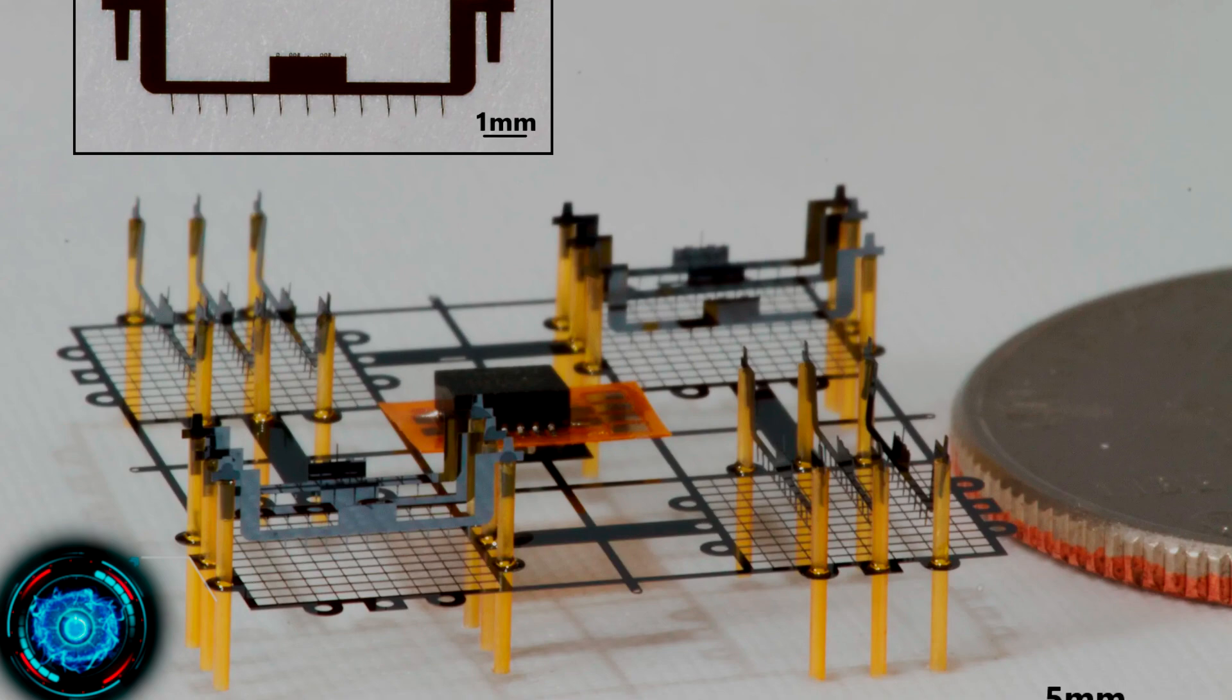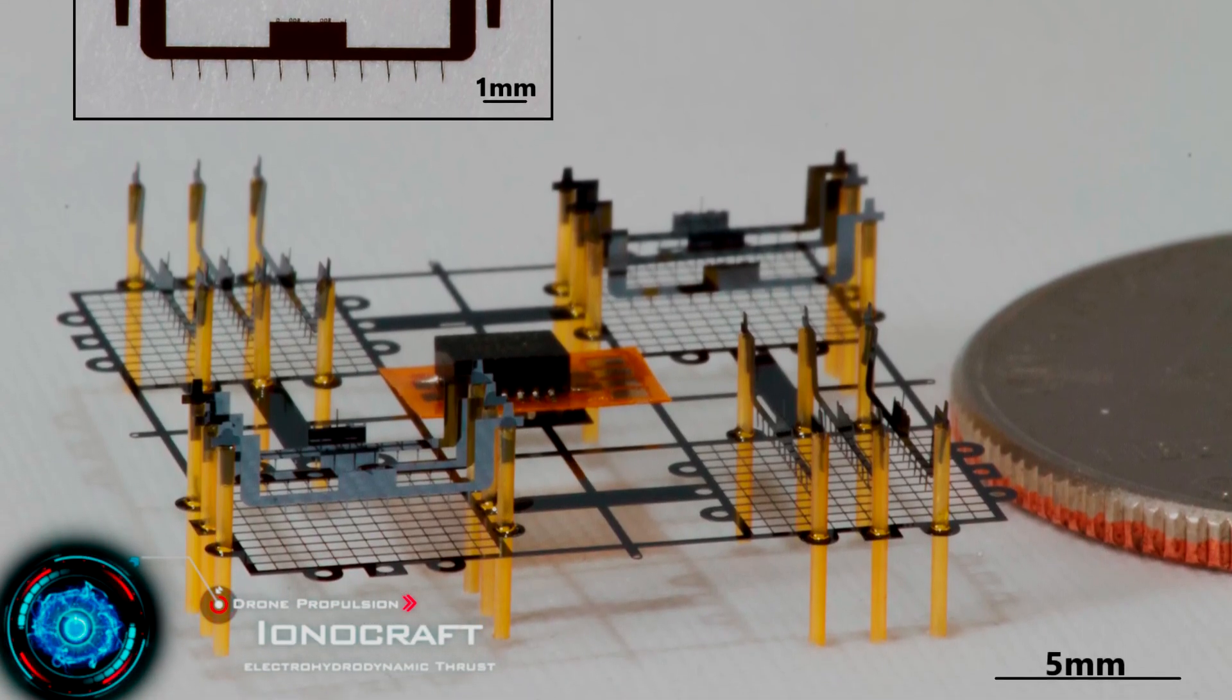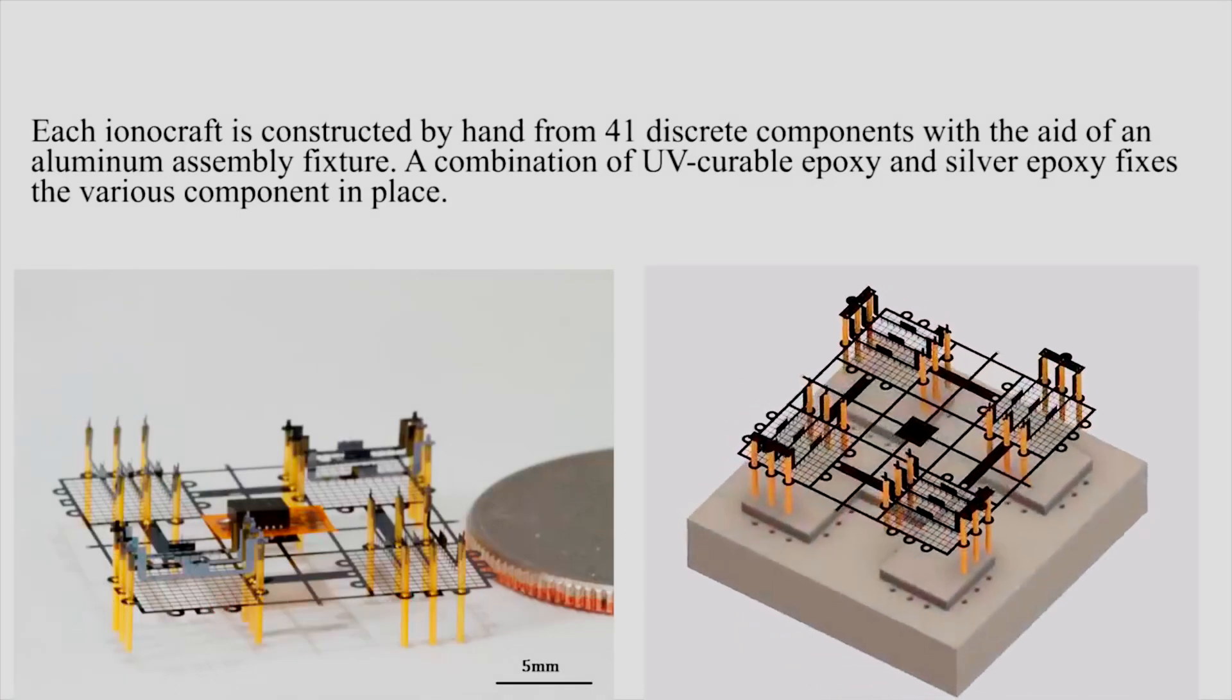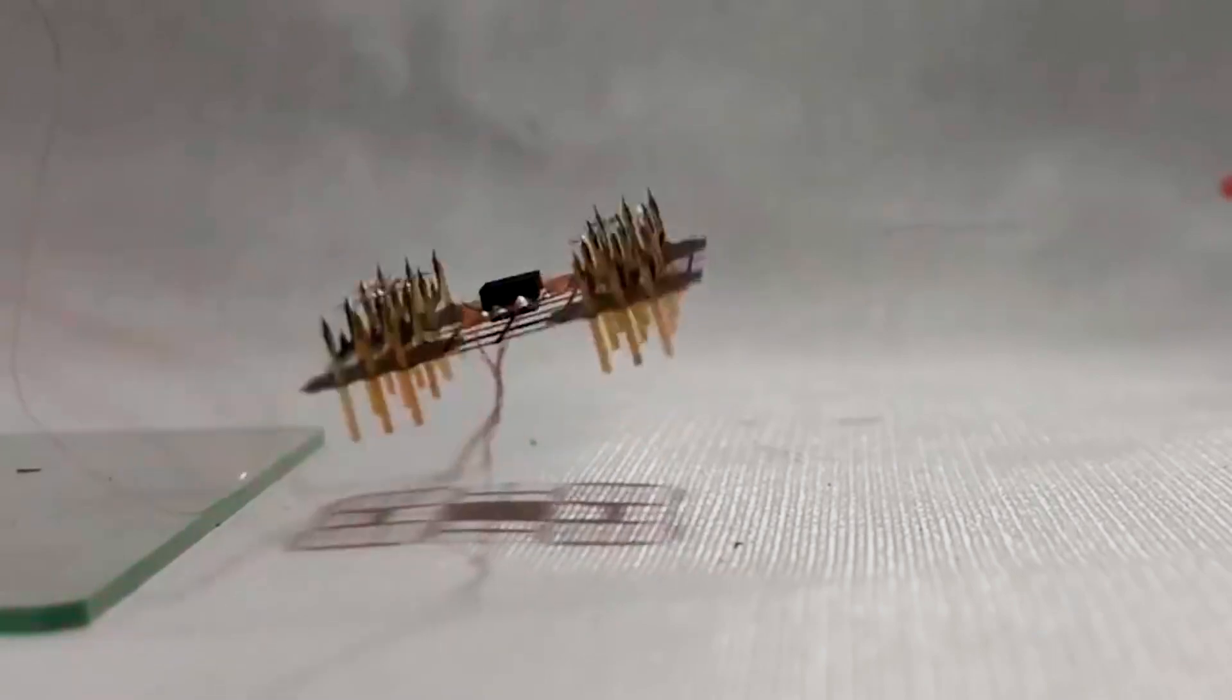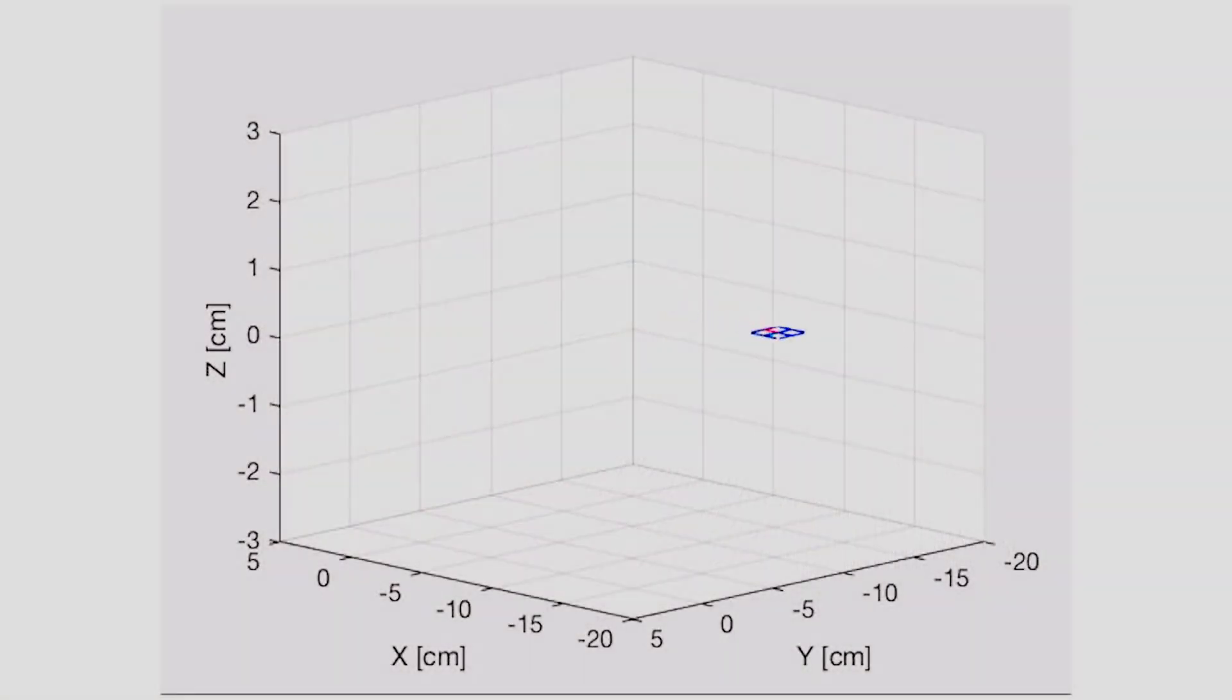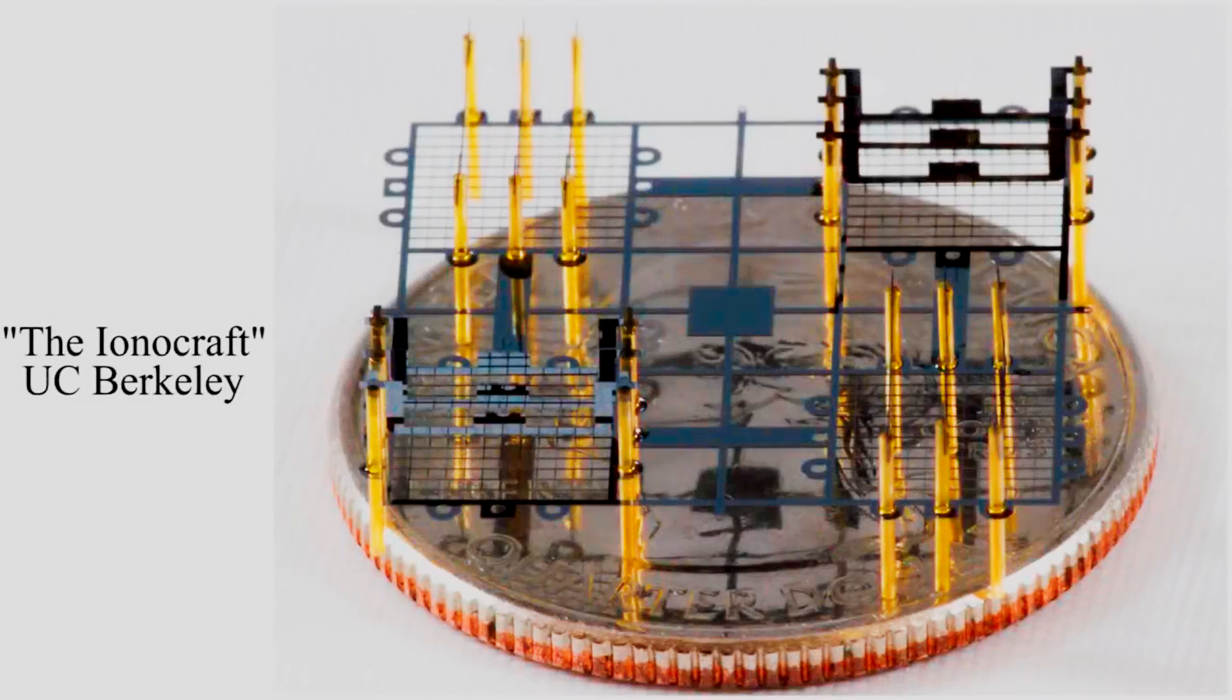One of the weirdest candidates out there is ion propulsion. Electro-hydrodynamic thrusters use a high-strength field to generate a plasma of ionized air. Ions are drawn towards a negatively charged grid, collide into neutral molecules, and then impact momentum. This was experimented with a very small 2cm² prototype. And oddly enough, it was found that scaling EHD thrusters down actually provides better thrust to weight ratios. So this might be a good idea for micro aerial vehicles.